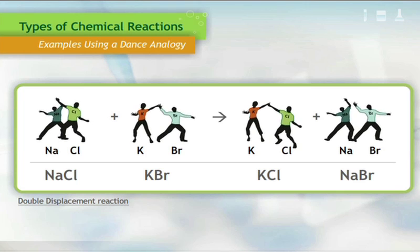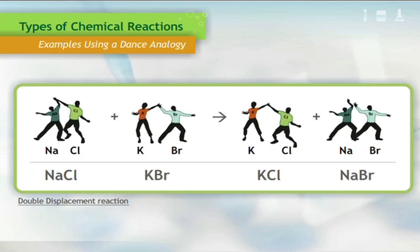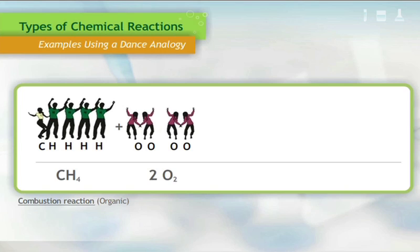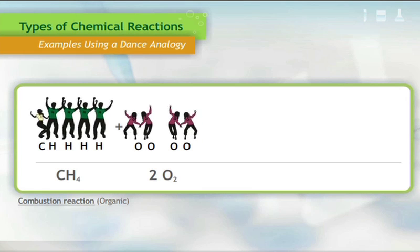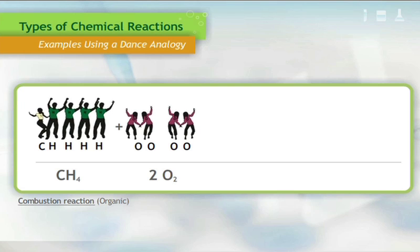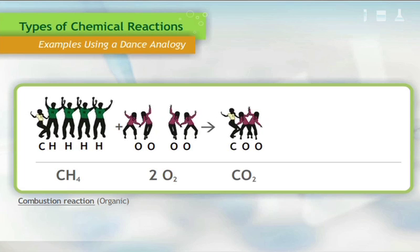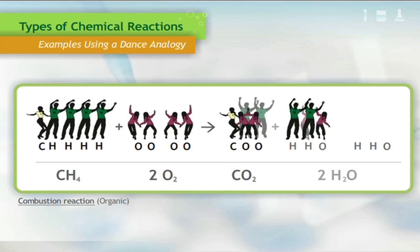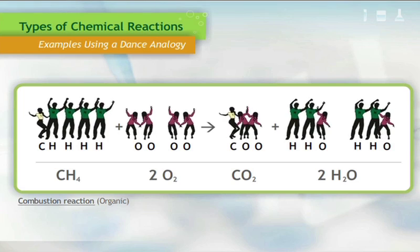The resulting products are potassium chloride and sodium bromide. A combustion reaction takes place when a compound is burned in the presence of oxygen. An example is organic methane, CH4, burning in the presence of oxygen, O2. The resulting products are carbon dioxide, CO2, and water, H2O.